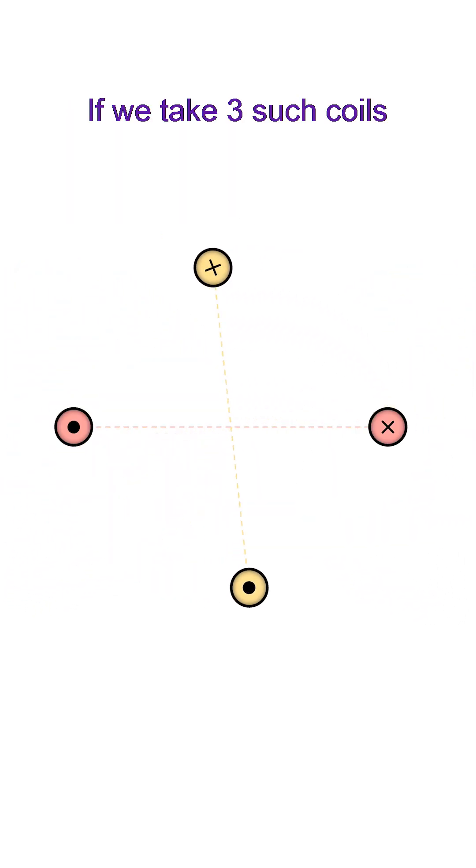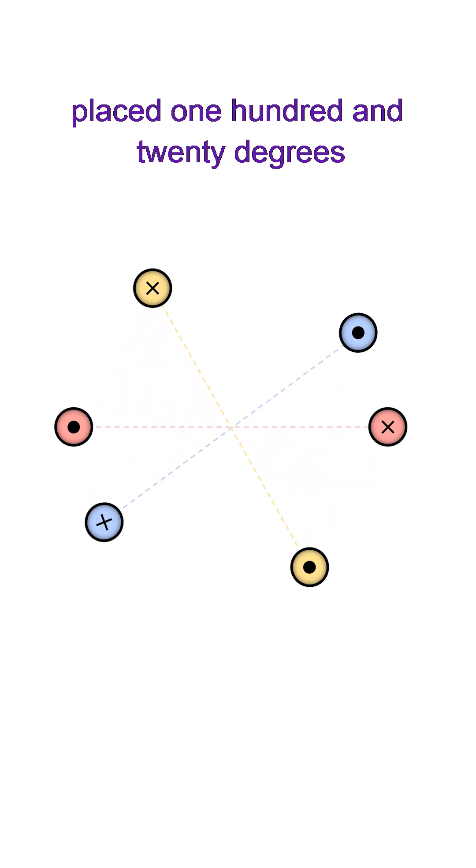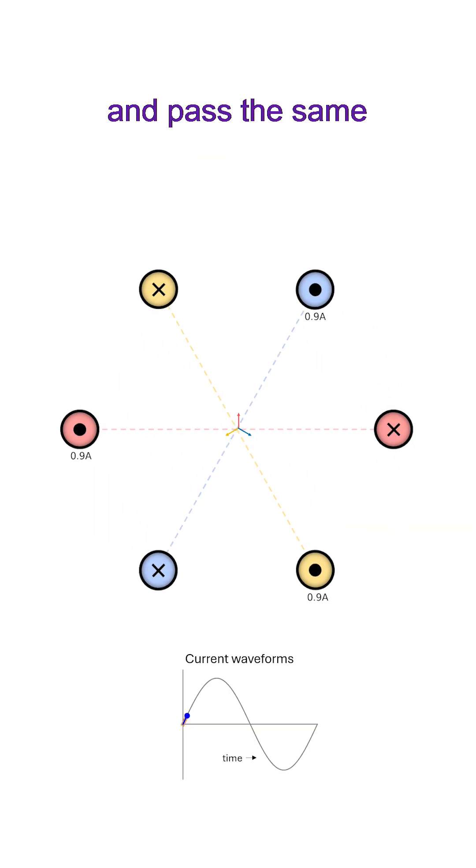If we take three such coils placed 120 degrees apart from each other and pass the same sinusoidal current through them, their fields cancel each other out. The net field is zero.